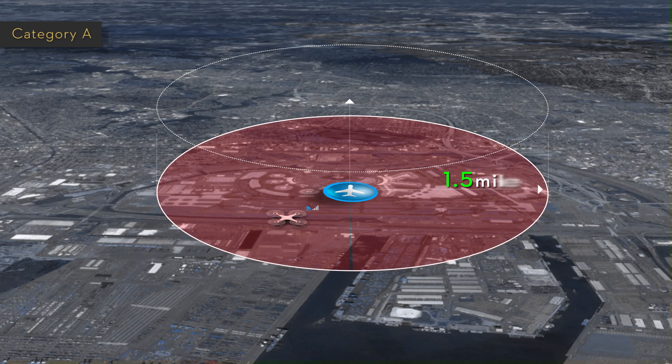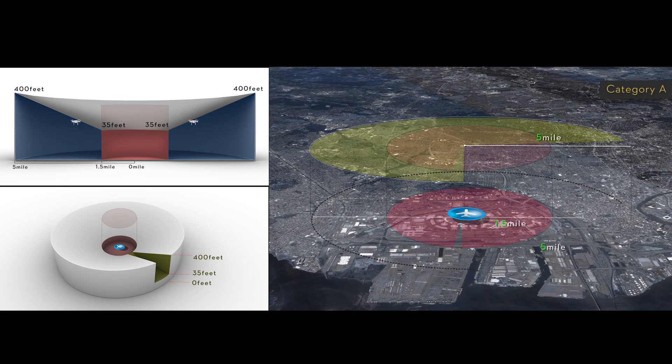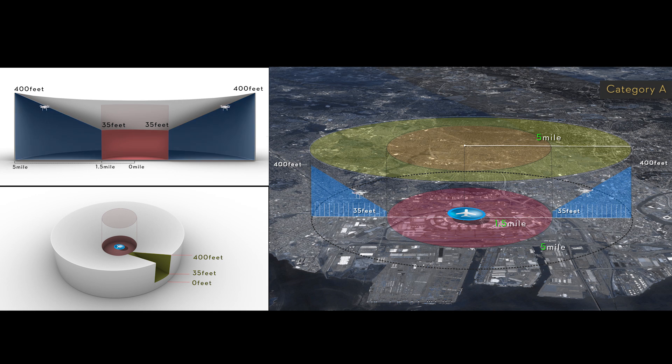In the first 1.5 miles or 2.4 kilometers away from a safety zone, you will be unable to take off. From 1.5 miles to 5 miles away from a restricted area, an increasing height limit has been established going from 35 feet at 1.5 miles to 400 feet at 5 miles.